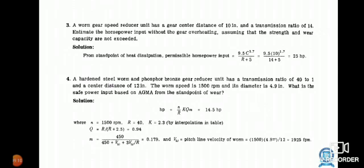A worm gear speed reducer unit has a gear center distance of 10 inches and transmission ratio of 14. Estimate the horsepower input without gear overheating, assuming strength and wear capacity are not exceeded. Solution from the standpoint...